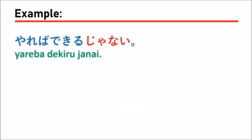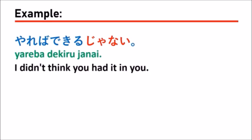The next example is: yare ba dekiru janai — which means 'If you do it, couldn't you do it?' or 'I didn't think you had it in you.' In this sentence, it means if you do something you can do it, but you're not sure. You confirm with someone whether they can do something or not, and they confirm back: yare ba dekiru janai — 'If you do it, couldn't you do it?' something like this.